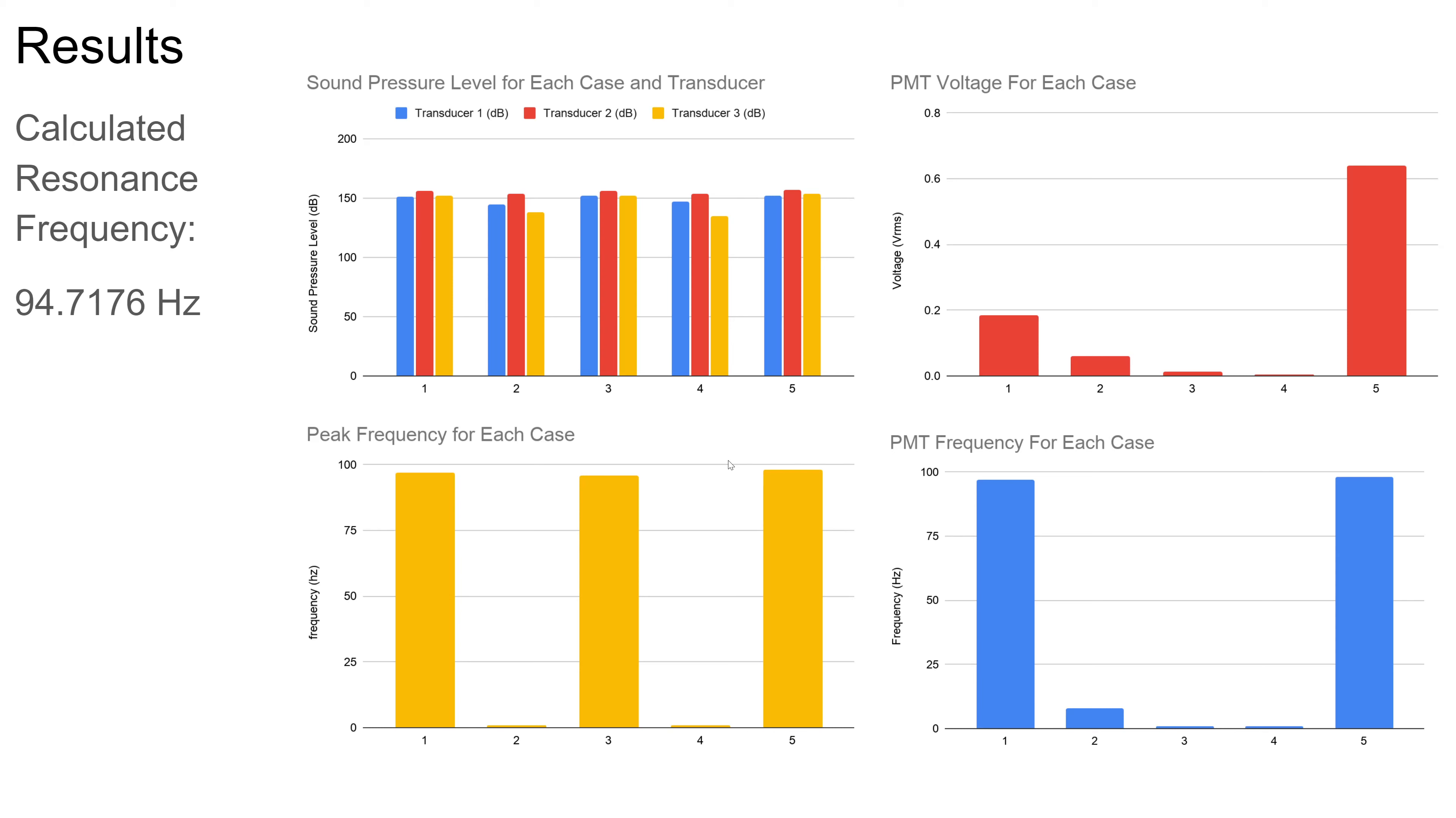So here we have the sound pressure level, peak frequency, PMT voltage, and PMT frequency for each case. Of note here, the cases without resonance frequency are clearly shown in the bottom figure on the peak frequency since they have a peak frequency of one rather than around that 94.7 Hz mark, which is calculated based on conditions in the lab at the time.